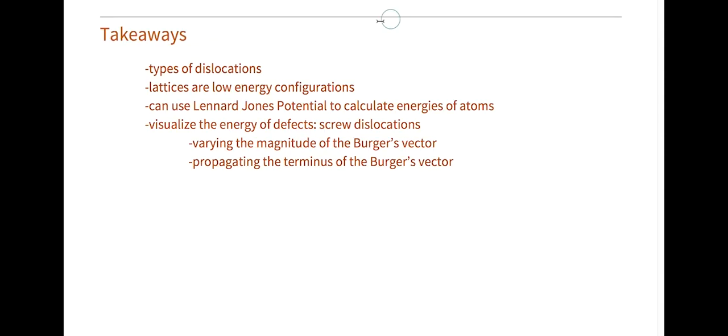So, here are some takeaways. First, I went over a couple of basic types of dislocations. Then I talked about how lattices are low energy configurations. I also showed how you can use Lennard-Jones potential to calculate energies of atoms. I then visualized the energies of defects using Lennard-Jones potential, and focused in on screw dislocations. I first varied the magnitude of the Burgers vector, and this was to show you how energy was higher around the position of the dislocations. I then showed you how a lattice changes as you move the terminus of the Burgers vector through it. I hope you've enjoyed learning about the energies of defects.